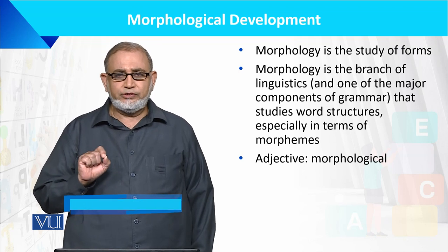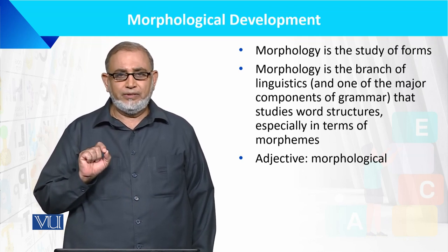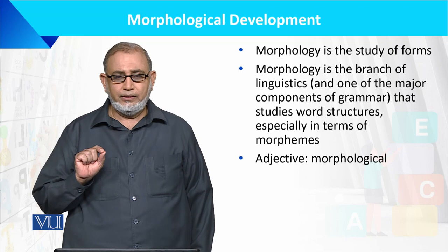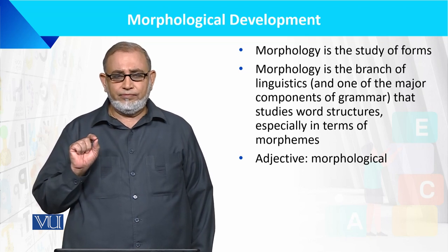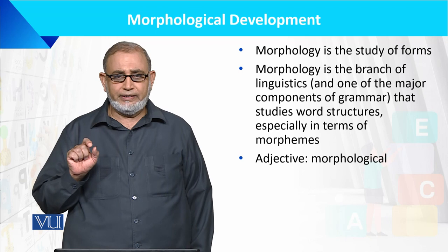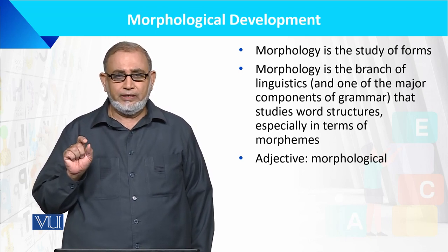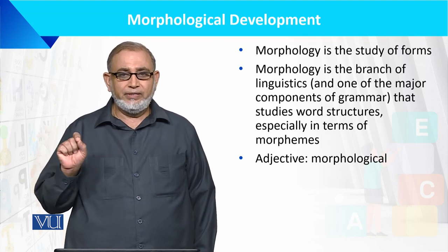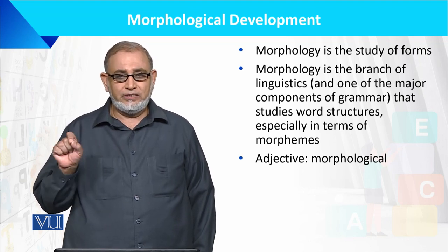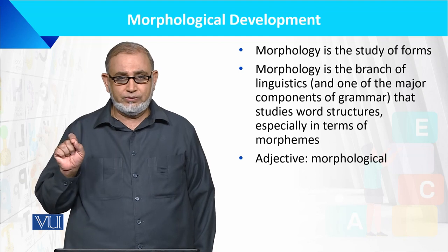Words can be made of morphemes. A single word can consist of one morpheme, like 'man', or multiple morphemes, like 'beautiful'. So, how many morphemes are there?